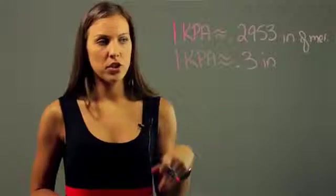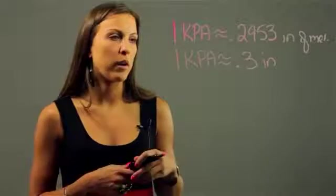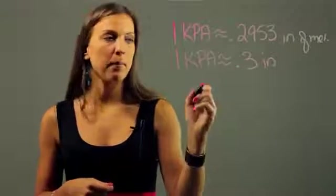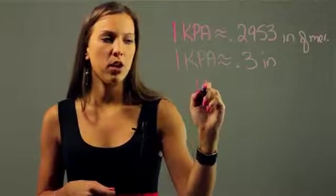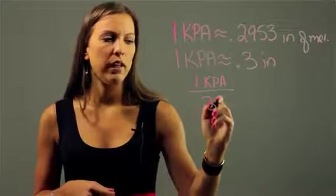So the first step to conversion is knowing what the conversion formula is, and then setting up a proportion to solve for whatever it might be. So if I know that 1 kPa is 0.3 inches, I'm going to set up a ratio that I can use for all of my conversions, 1 kPa over 0.3 inches.